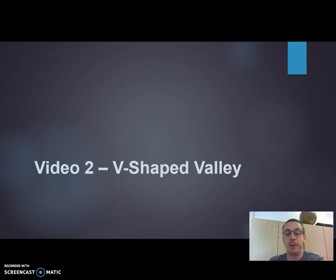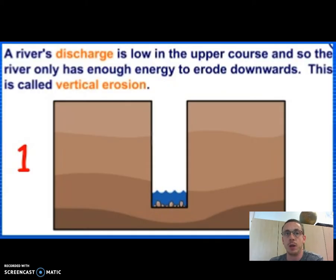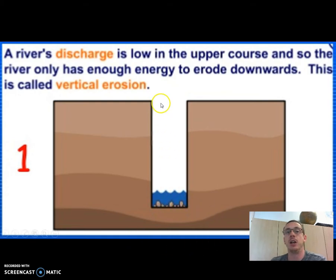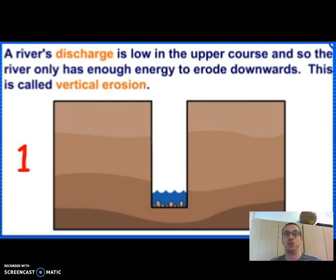When we think about the formation of a V-shaped valley, we split it up into four stages. First, in the upper course, rivers tend to erode straight down, or vertically. The river erodes straight down because it's only got enough energy to erode that way. We call this vertical erosion.